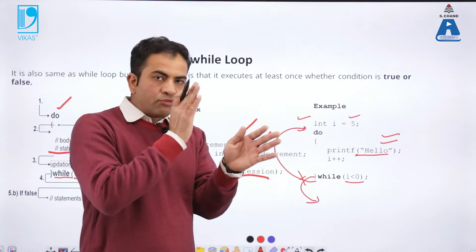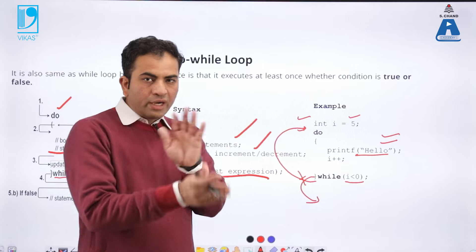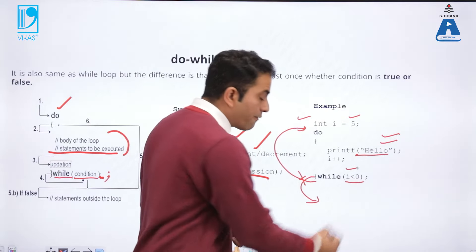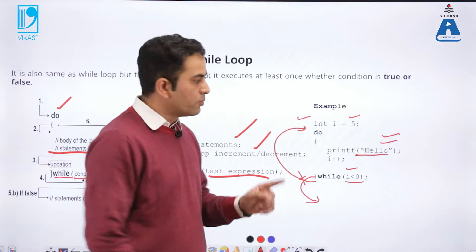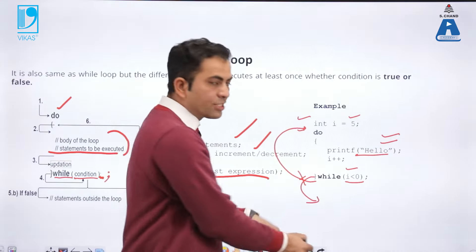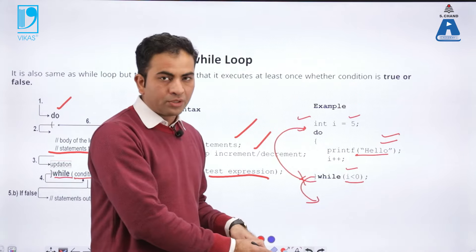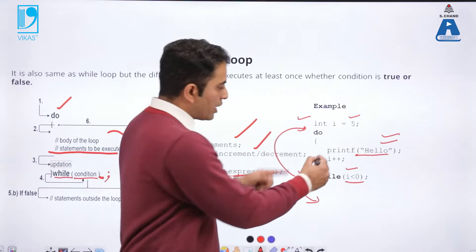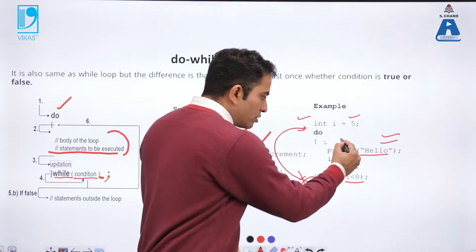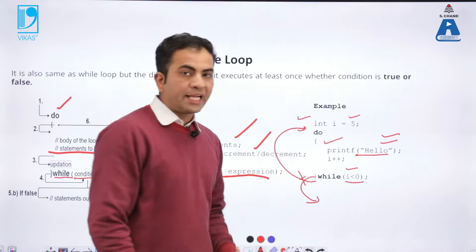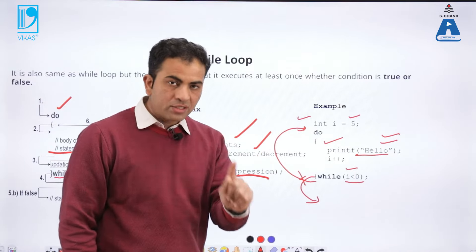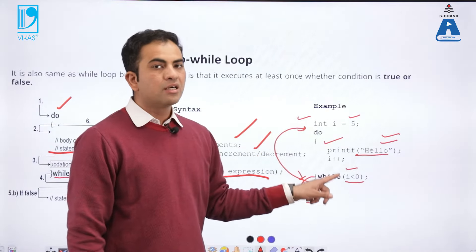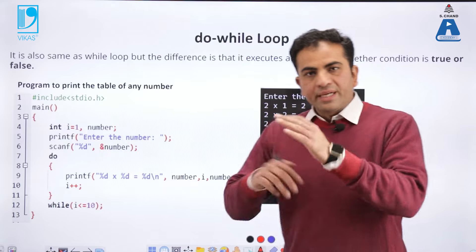The difference between while and do-while is: in the while loop, the condition is checked first, and if true, the statement executes. But in do-while, the statement executes once first, and then the condition is checked.